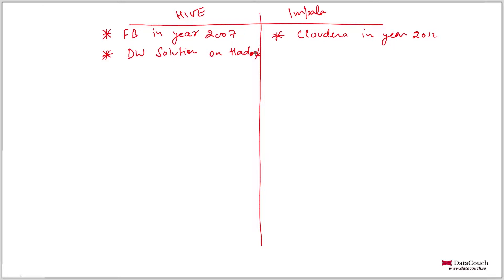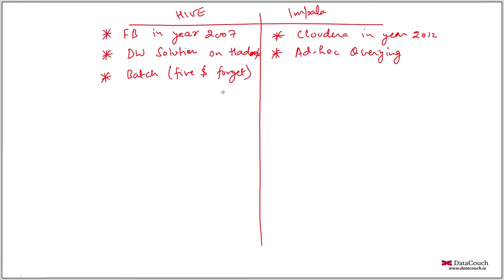Impala was created with the intention to perform ad hoc querying on big data. Hive is a batch solution — you can do fire-and-forget use cases, scheduling long-running queries and waiting for results. With Impala, user presence is required, so it is designed for interactive use cases.